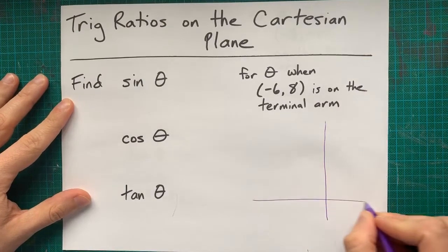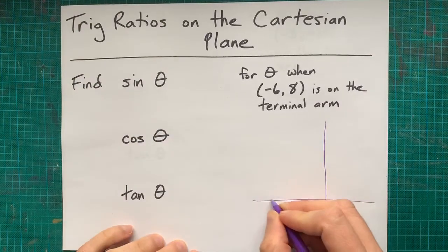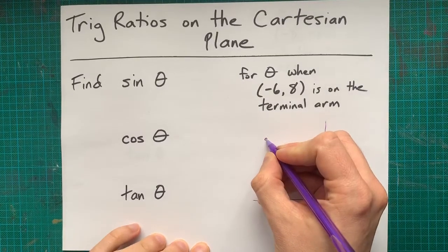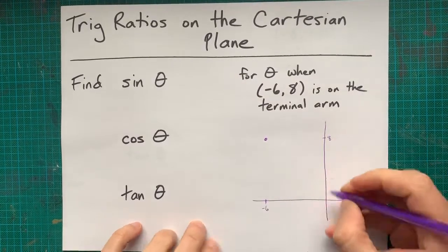is in quadrant 2. I know that because it's a negative x value. You have negative 6 on the x-axis, and then you go 8 up on the y-axis.